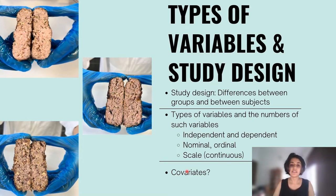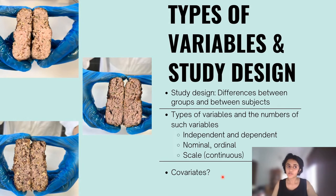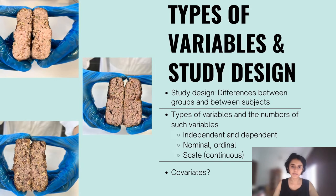In SPSS, continuous variables might be denoted by the word 'scale'. Covariates are something I didn't need to use, but you might. These are essentially factors for which you want to control. For example, if I'm looking at fat content but I want to control for moisture, then moisture becomes my covariate. I hope it's clear up to this point — if you've got any questions, please drop them in the comments and I'll do my best to answer them.